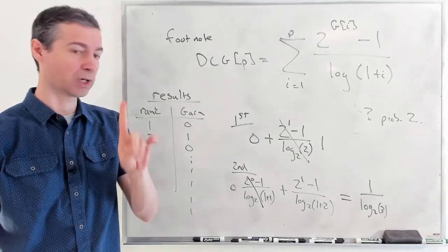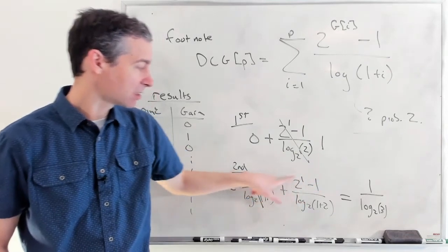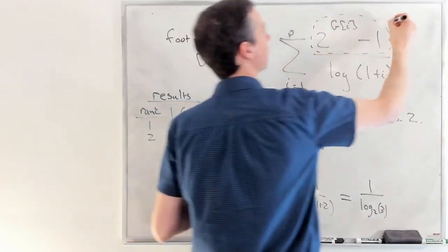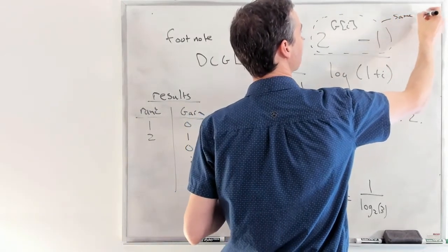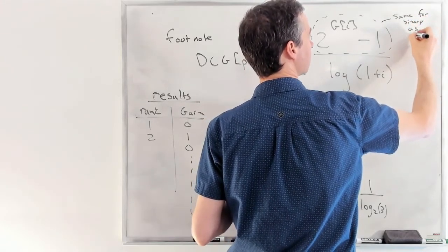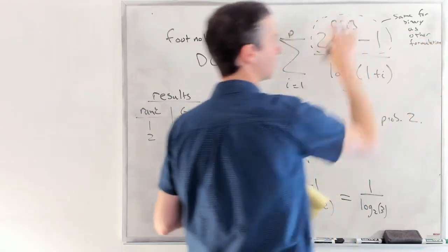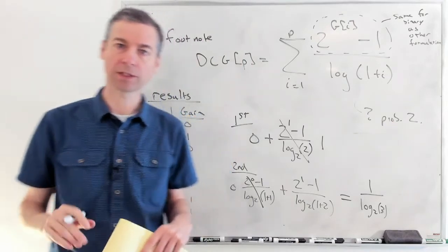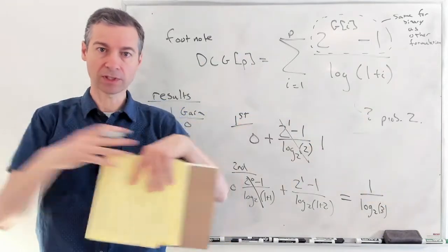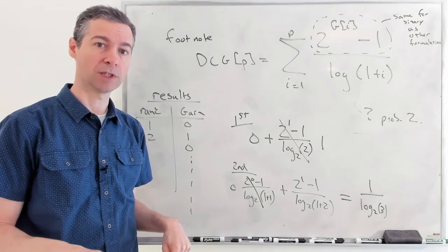I think the feeling was, and probably what the actual intent was to communicate, were that the gains, this part is the same for binary as other formulations. So whatever we put for the gain at that rank is the same if we're doing binary. And I think that's what the intention of the footnote was. It wasn't that the entire formulation, the entire DCG is identical, but that the gain values of those given ranks are identical if it's binary relevance, and that's certainly true.